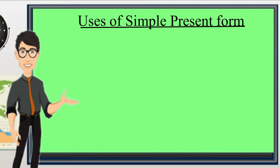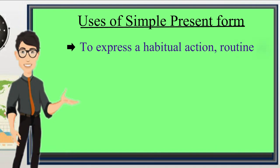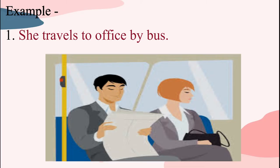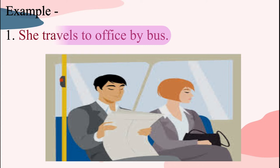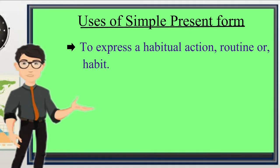Now, let us see where the simple present form or simple present tense is used. Number one, it is used to express a habitual action, a routine action or a habit. An example is: she travels to office by bus. This is a routine action.